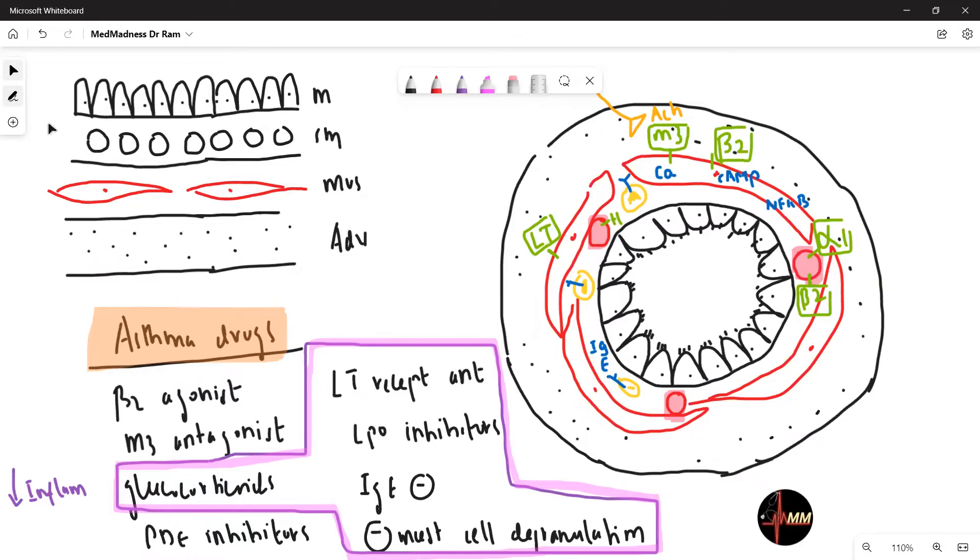For example, this is the bronchial wall and the layers here are mucosa, submucosa, muscularis and the outer layer.